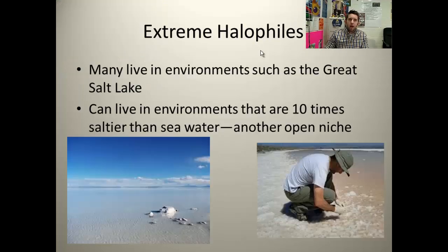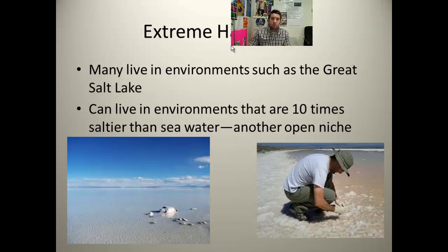The second group is the extreme halophiles. 'Halo' refers to salty conditions — they enjoy very salty conditions, such as the Great Salt Lake. They thrive in these conditions and can live in environments that are ten times saltier than seawater. Once again, this is an open niche — not many things can live here. So these are very opportunistic organisms that have moved into a niche and are thriving.